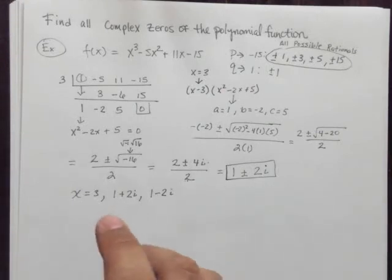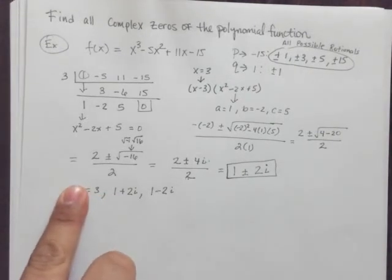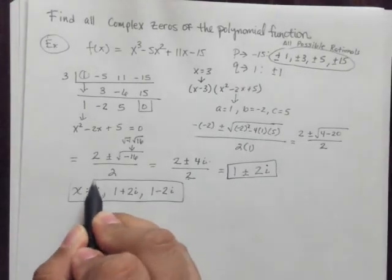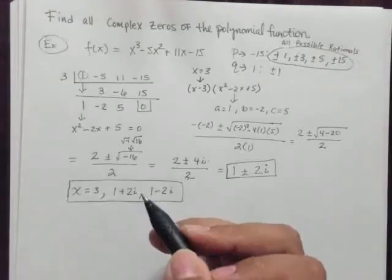So if you have to list them online, you probably list those right there separated with commas. But, of course, these are the zeros, both real and complex, for this given polynomial function.